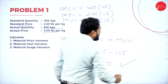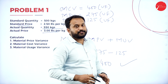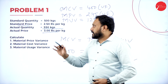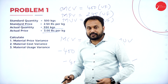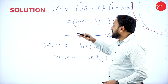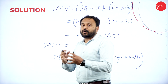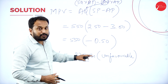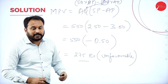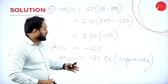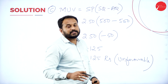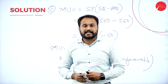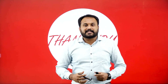That is how you get full marks easily. To summarize: MCV = ₹400 Unfavorable, MPV = ₹275 Unfavorable, and MUV = ₹125 Unfavorable. For any doubt regarding this session, please do call us — we are always there to help you. Thank you so much, I'll see you when I see you.